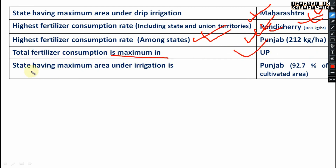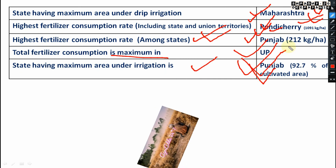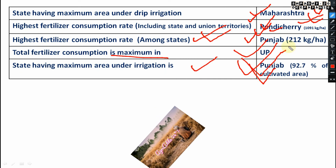The state having maximum area under irrigation is Punjab — very very important. Some of these important points you need to memorize by heart.